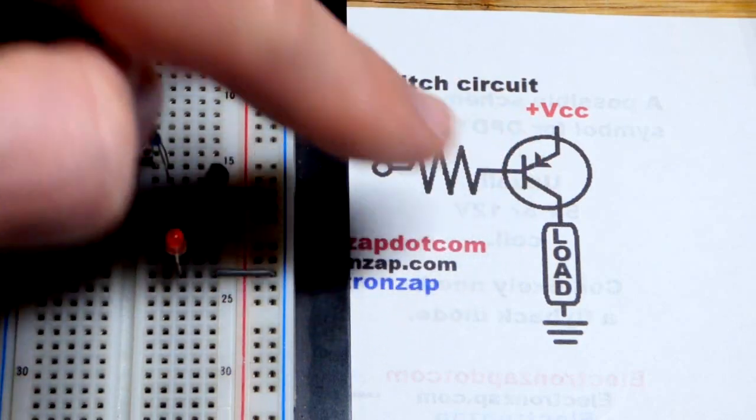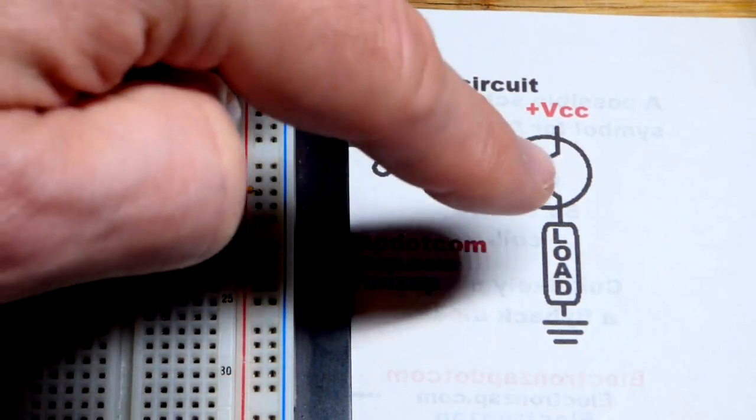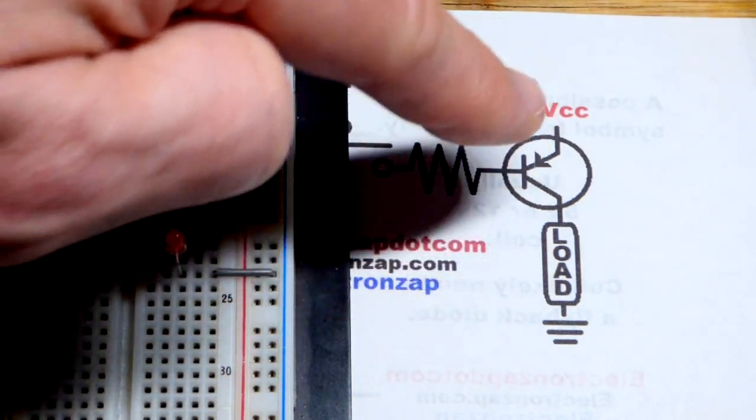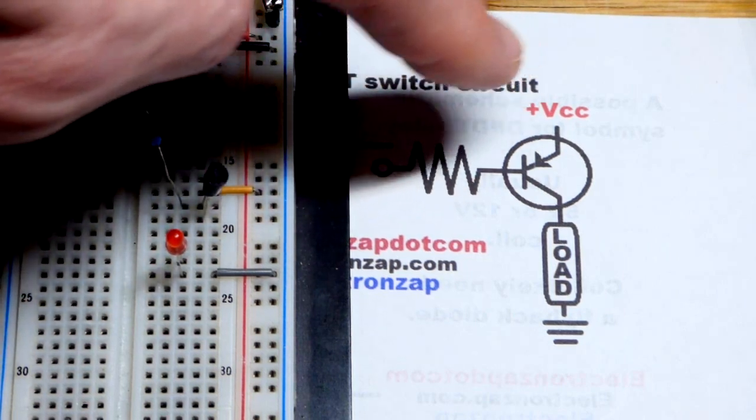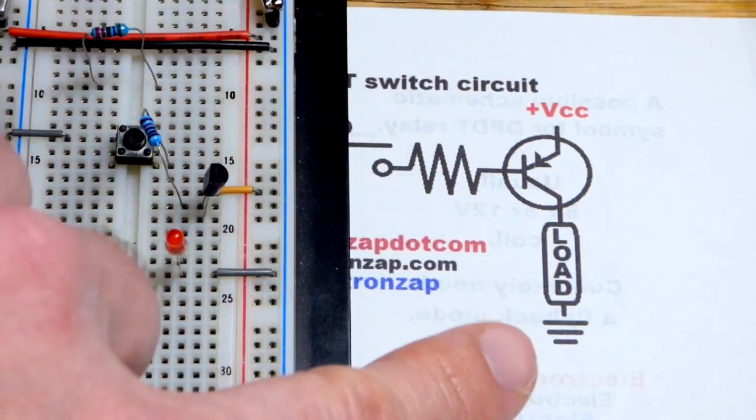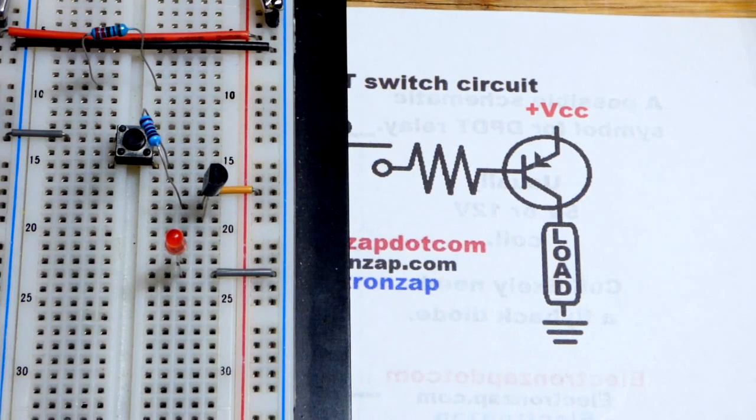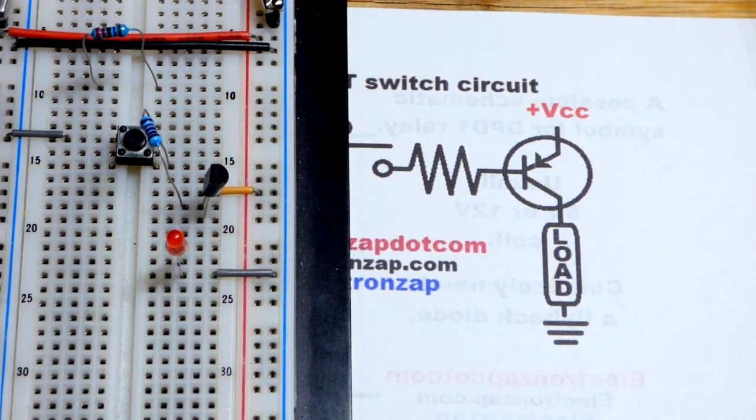So that's usually how you'll see the PNP bipolar junction transistor schematic, where the emitter is on top, because usually for the schematic, the positive side of the supply is on top, and ground, or the more negative side, is on the more bottom side.